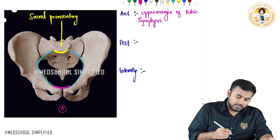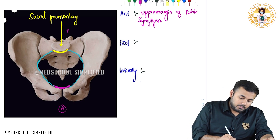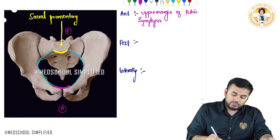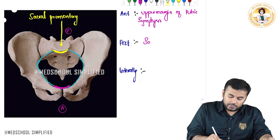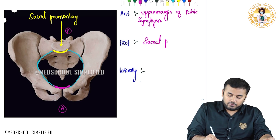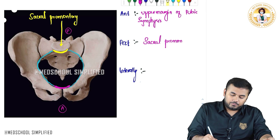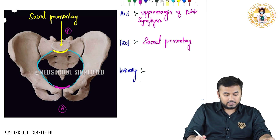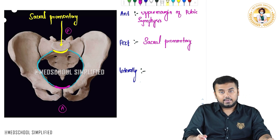Posteriorly — if anteriorly is this end, then posteriorly is the other end — we have the sacral promontory. So posteriorly we have the sacral promontory.